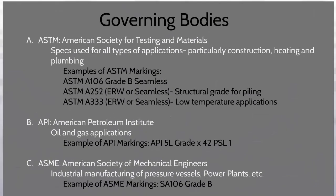ASTM — American Society for Testing and Materials. These specifications are used for all types of applications, particularly construction, heating, and plumbing. API — American Petroleum Institute. These are used for oil and gas applications. ASME — American Society of Mechanical Engineers. Used for industrial manufacturing of pressure vessels, power plants, and more.